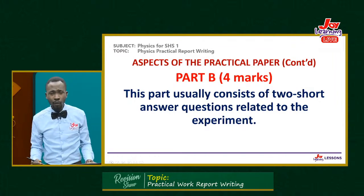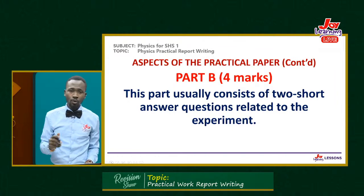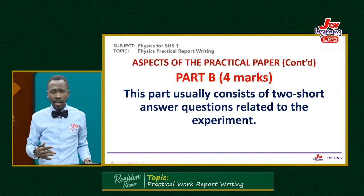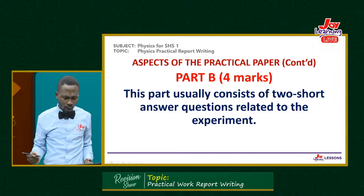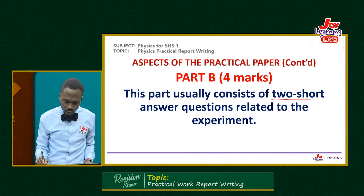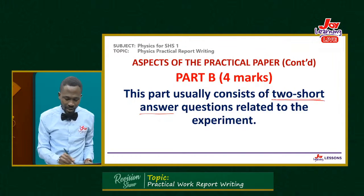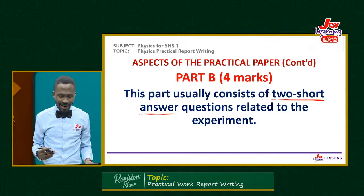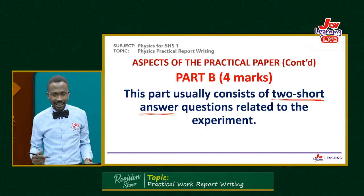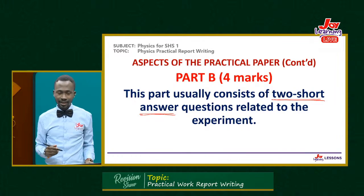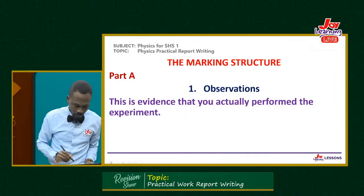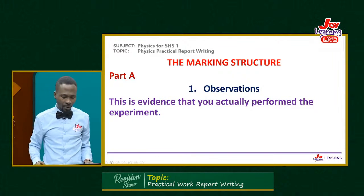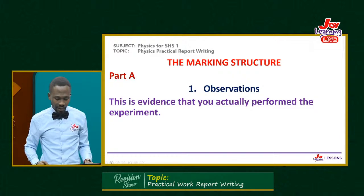Part B of the same question gives you 4 marks, and usually you have 2 short answer questions related to the experiment. Remember, Part A gives 21 marks and you have 25 marks for the whole question. Now let's look at the marking structure, starting with Part A — the observations.